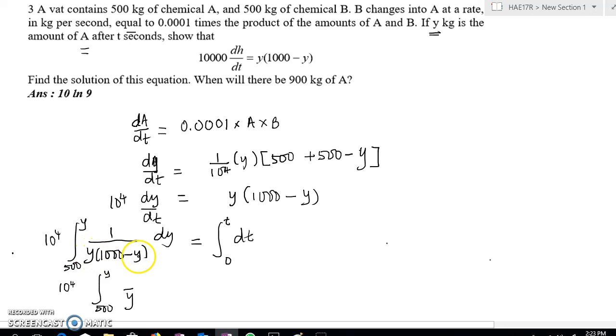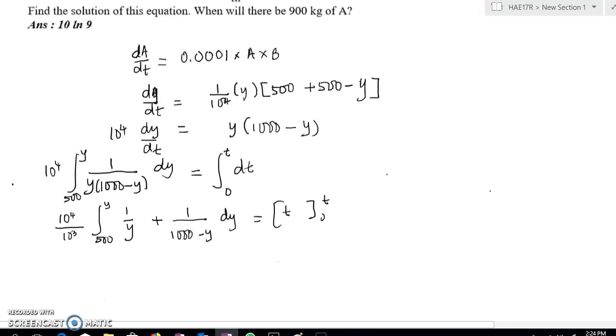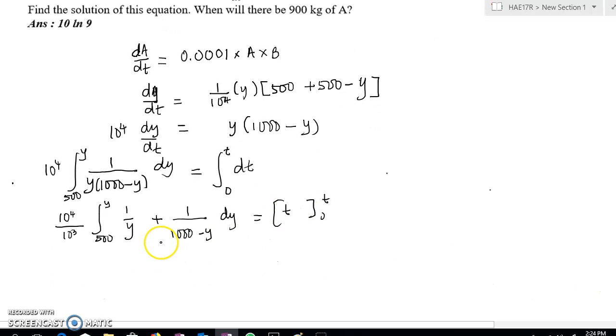Y is 1000, so 1 over 1000, so we have 1000 here, 10 to the power of 3, plus 1/(1000 minus Y) dY equals to t, zero and t. So the left side I change the partial fraction, the right side I can just integrate straight away.